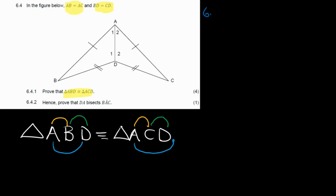So when we are answering this question, we're going to say 6.4.1. We are going to say, starting with the yellow, AB is equal to AC. We were given that. So we'll write given.